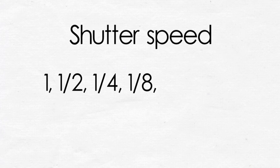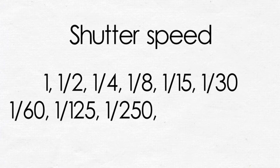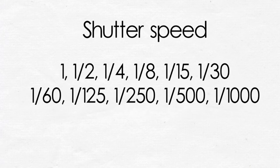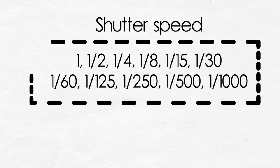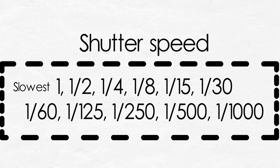Shutter speeds start from 1 second, half a second, 1/4, 1/8, 1/15, 1/30, 1/60, 1/125, 1/250, 1/500, and 1/1000. Modern cameras have shutter speeds from 30 seconds onward to 1/8000, but let us stick to 1 second down to 1/1000, where 1 second is the slowest shutter speed and 1/1000 is the fastest. 1 second is 1 full second; the rest are all fractions of a second — for example, 1/125 means one hundred and twenty-fifth of a second.